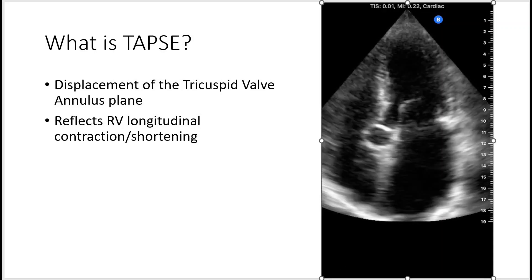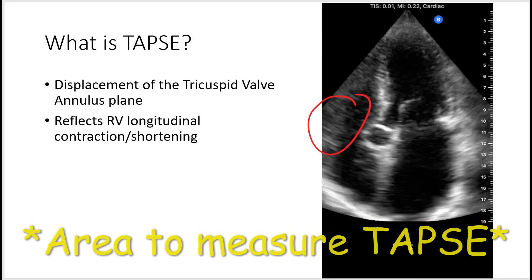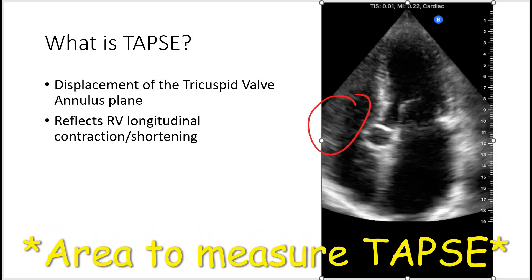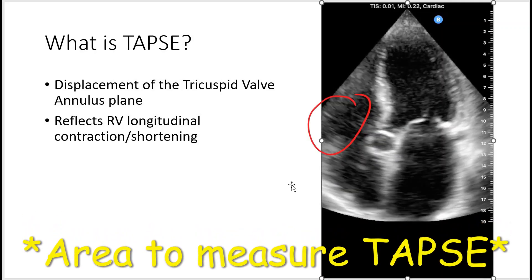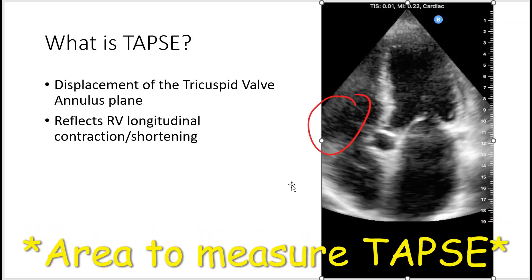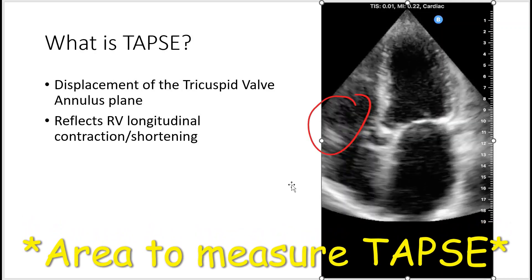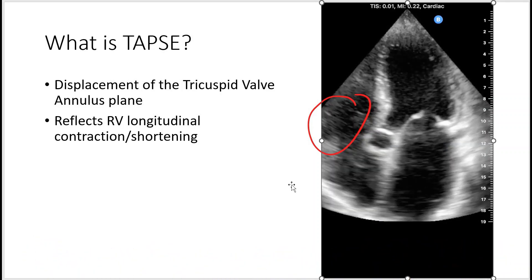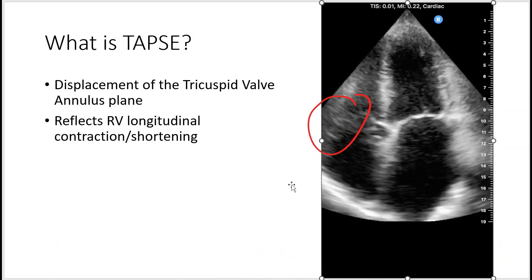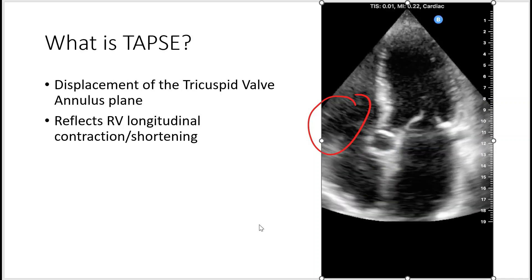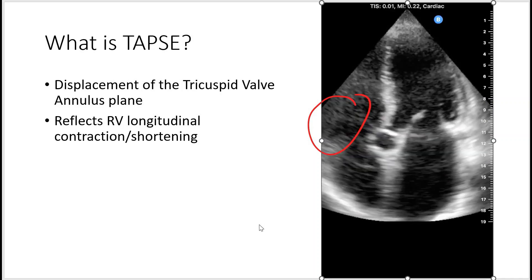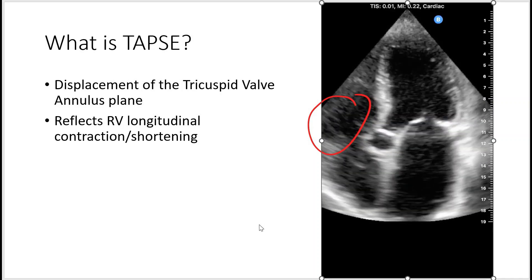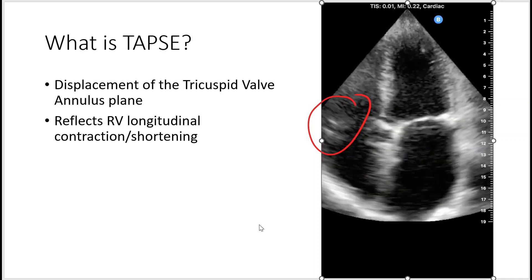This area is where the TAPSE is located, near the tricuspid valve. And as you can see, as the heart is in systole, or contracts, the wall gets shorter.